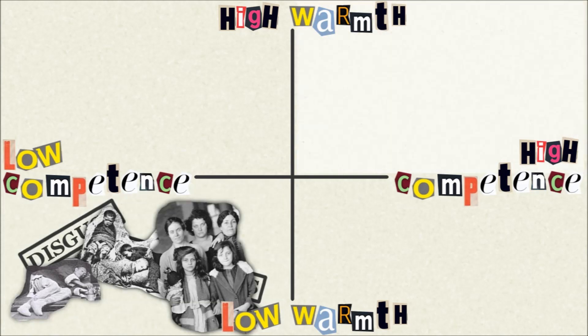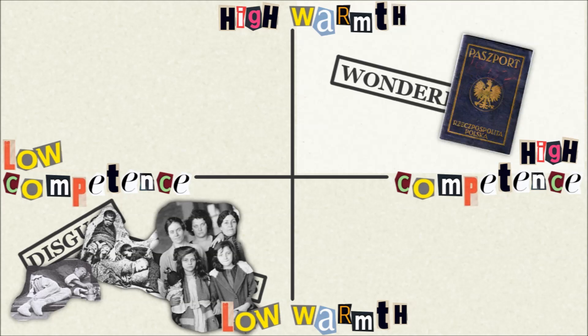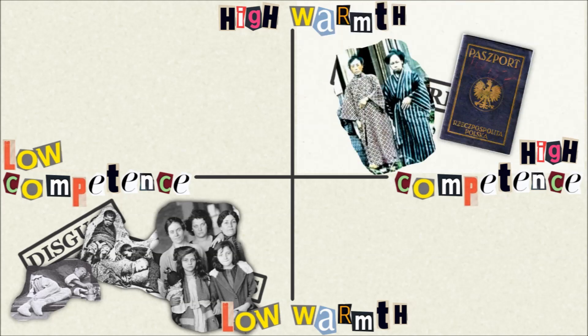At the opposite extreme are groups stereotyped as high on both dimensions. People believe these groups are totally wonderful, both warm and competent. These stereotypes benefit citizens, the middle class and often the country's dominant ethnic and religious groups. In the US, that would be whites and Christians.